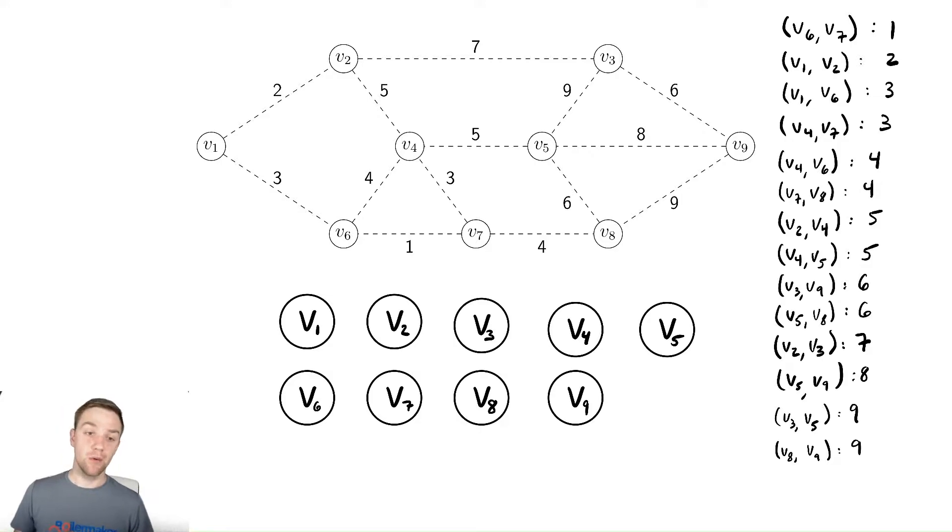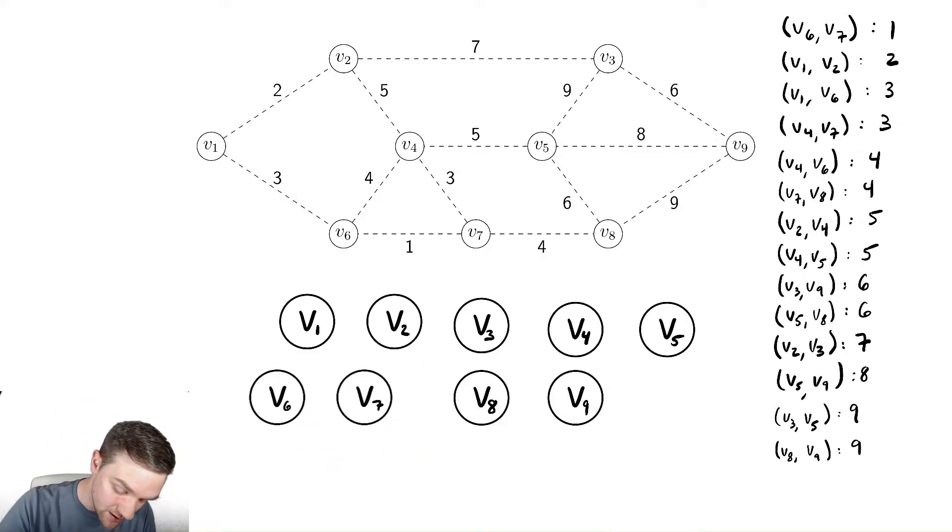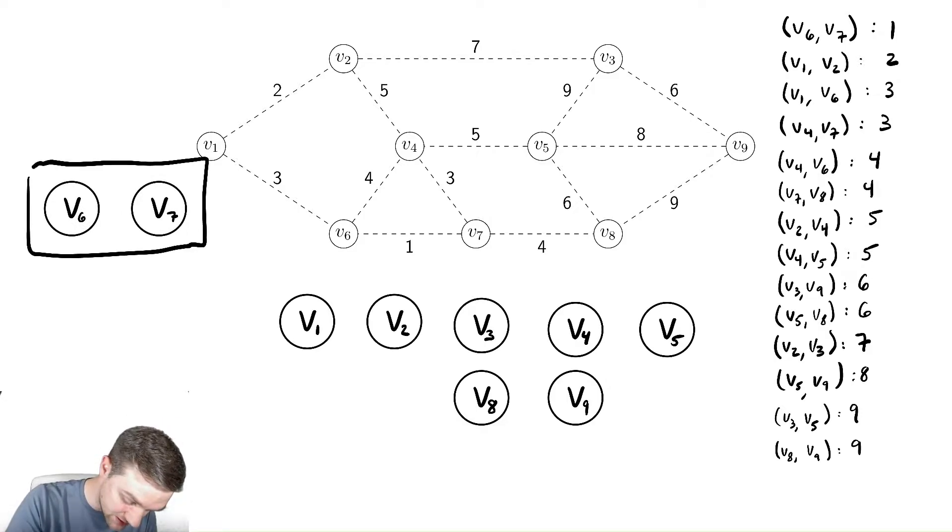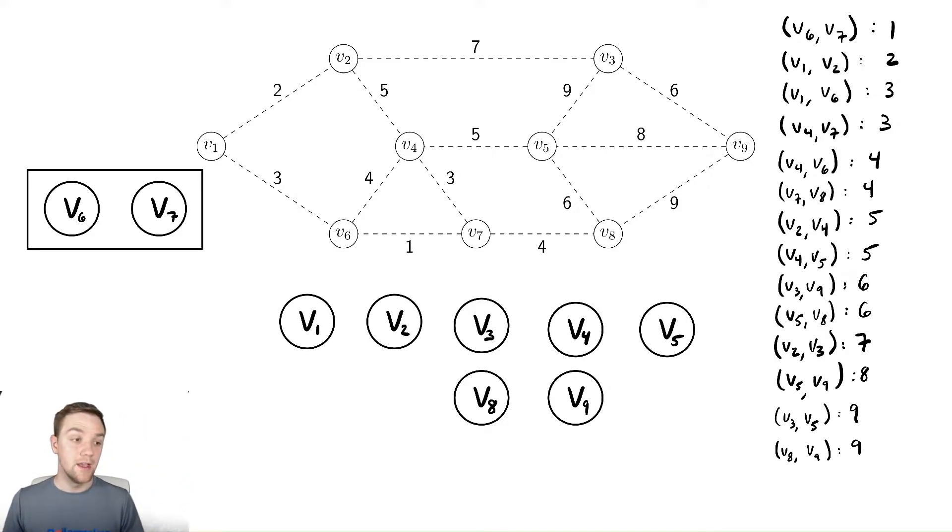We're going to begin the algorithm by looking at the minimum weight edge in the entire graph, which has v6 and v7. So we're going to take v6 and v7 and move them off on their own, and we're going to group them together into some set. So we group these things together into some set over here, and we're going to add those to the minimum spanning tree. So we're going to add v6 and v7 and that edge that we just discussed to the minimum spanning tree.